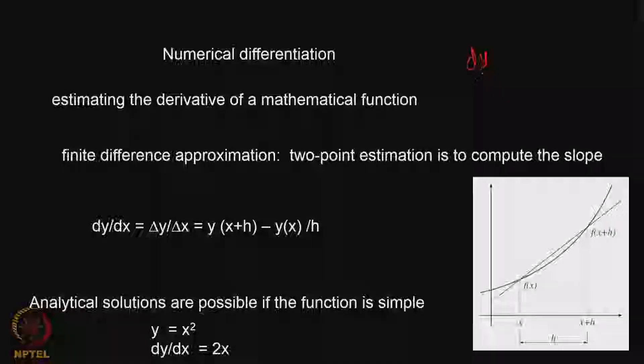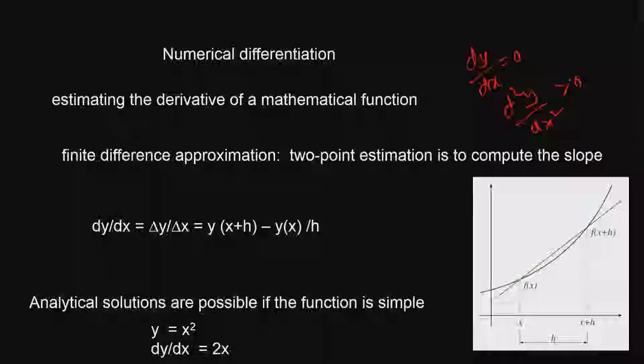But we will come across numerical methods in drug discovery because, like I mentioned, if you are looking at minima, then we need to think that dy/dx should be equal to 0 and d²y/dx² should be greater than 0. So dy/dx is calculated, which we looked at in the previous class. We need to understand how computers use numerical techniques to calculate that.